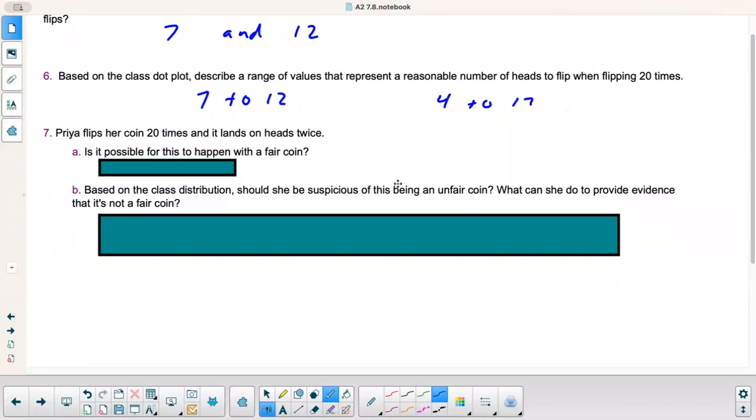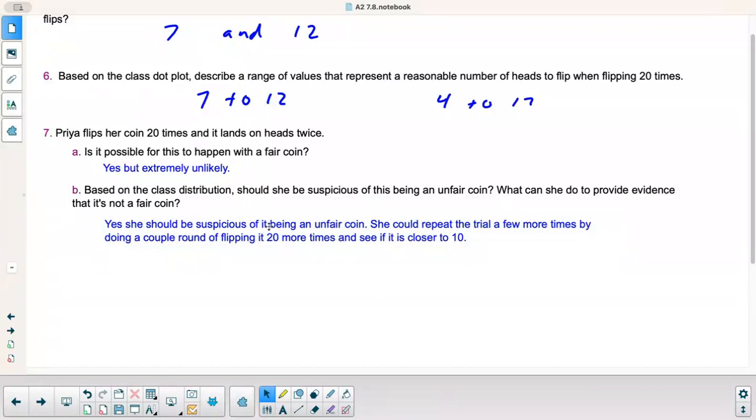Alright, number 7. Priya flips her coin 20 times and it lands on head twice. Is it possible for this to happen with a fair coin? Yes, but it's extremely unlikely to only have two heads out of 20 flips when it's basically a 50-50 chance. Very, very unlikely that that would happen, but it's possible. Based on the class distribution, should she be suspicious of this being an unfair coin? What can she do to provide evidence that it's not a fair coin? So yes, she should be suspicious of it being an unfair coin. She should repeat the trial a few more times by doing a couple rounds of flipping it 20 more times to see if it is closer to 10. That will tell you if it was just a bad trial or if she keeps getting numbers closer to two, I would definitely suspect that the coin is weighted or something.